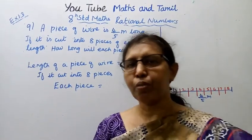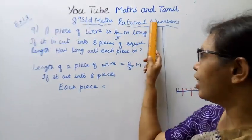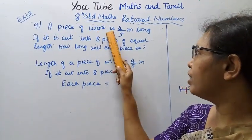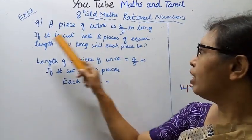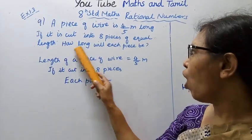Hello students, welcome to Maths and Tamil channel. Eighth standard Maths, Term 1, Rational Numbers, Exercise 1.3, Question 9. A piece of wire is 4 by 5 meter long. If it is cut into 8 pieces of equal length, how long will each piece be?